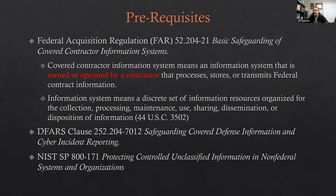First is FAR 52.204-21 for basic safeguarding of covered contractor information systems. What is a covered contractor information system? Those are things that are owned or operated by a contractor that process, store, or transmit federal contract information (FCI) or controlled unclassified information (CUI). When a system owned or operated by a contractor processes, stores, transmits, or uses those two types of information, they come into play for CMMC.